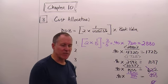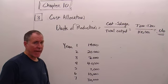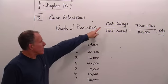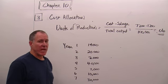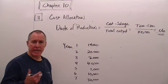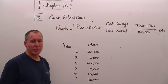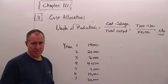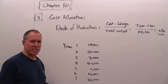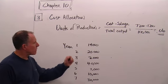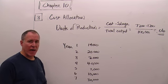The last GAAP method is units of production. The formula is cost less salvage over the total output. Our asset is $7,200 with a $1,200 salvage. Instead of allocating over years as with straight line, the life is defined in total output — 100,000 units. So our activity rate is $0.06 per unit. We then look at each year's actual production and multiply by $0.06 to get that year's depreciation. In year one, we had 14,000 units; in year two, 20,000 units.